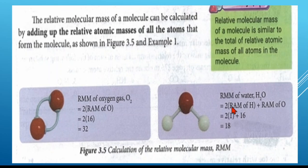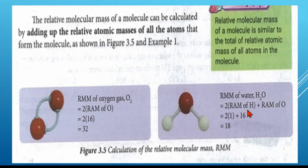We multiply two hydrogen atoms by the RAM of hydrogen, which is 1, so 2 × 1 = 2. Then the RAM of oxygen is 16, with one oxygen atom giving 16. We add up the RAMs: 2 + 16 = 18. So the RMM of the water molecule is 18. Remember, relative molecular mass is found by adding up all the RAMs of every atom in one molecule.